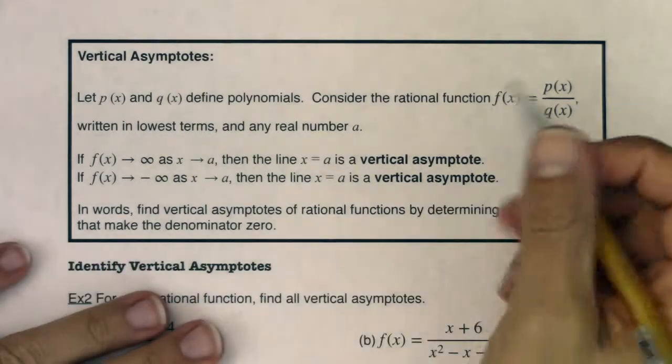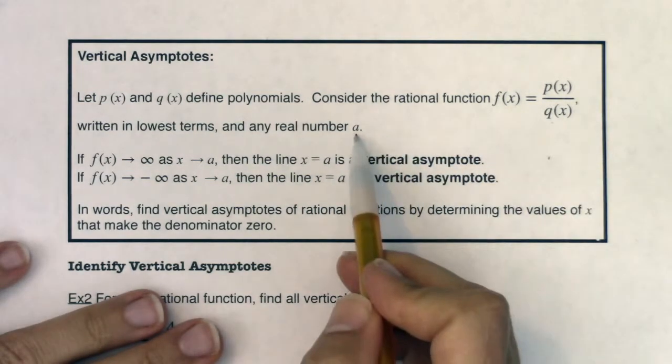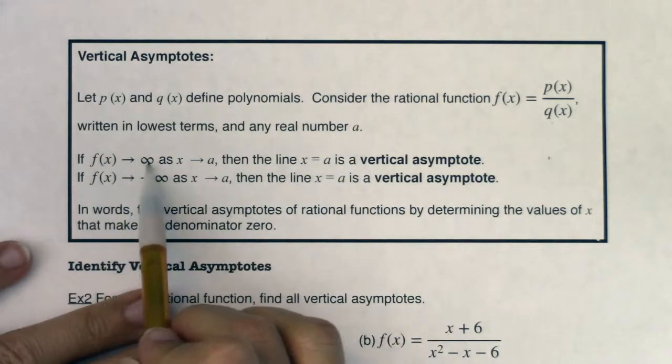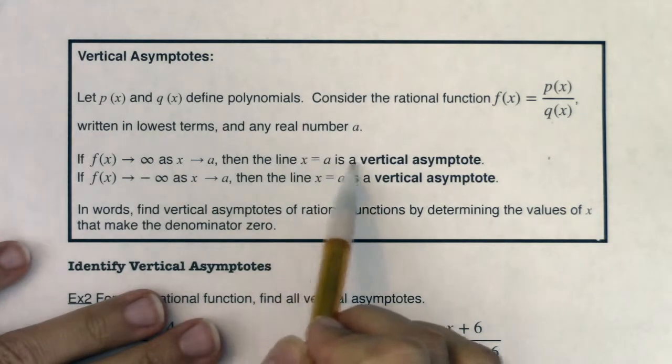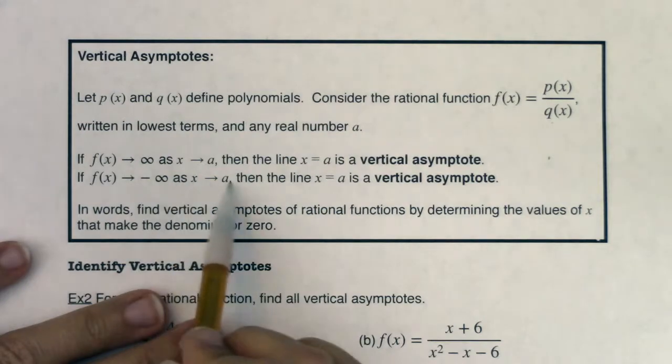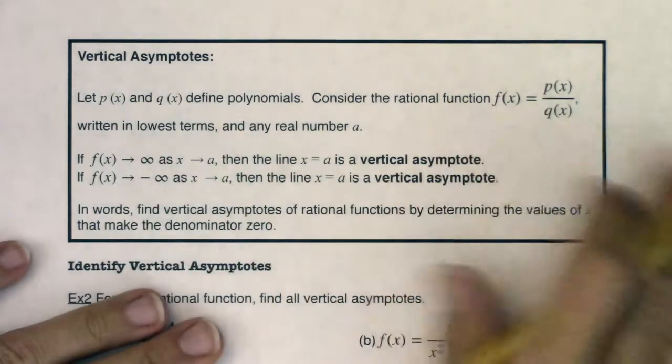Alright, so let's have our rational function, our p's over q's, written in lowest terms so everything's been reduced, and then consider any real number a. If f(x) goes to infinity as x goes to a, then the line x equals a is a vertical asymptote, and if f(x) is going to negative infinity as x goes to a, then x equaling a is also a vertical asymptote.